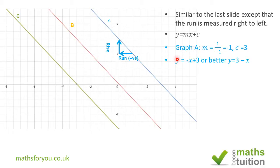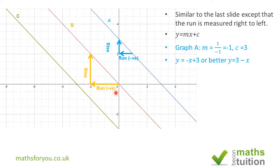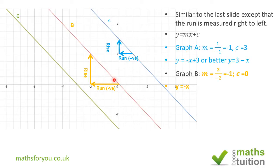So the equation of graph A is y = −1x + 3, which we write as y = −x + 3, or equivalently y = 3 − x. Note: it's just y — not 2y or 3y — we make y the subject. For graph B, the same approach gives rise over run = 2 over minus 2 = −1. This graph crosses the y-axis at 0, so the equation is y = −x + 0, which simplifies to y = −x.